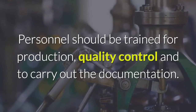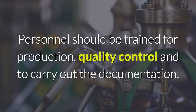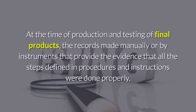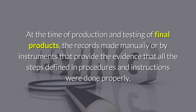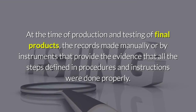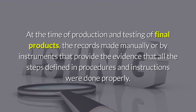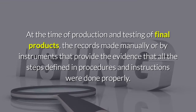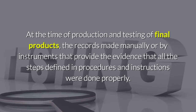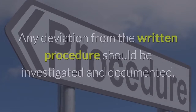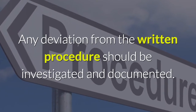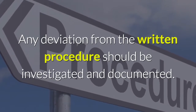Personnel should be trained for production, quality control, and to carry out the documentation. At the time of production and testing of final products, records made manually or by instruments should provide evidence that all the steps defined in procedures and instructions were done properly. Any deviation from the written procedure should be investigated and documented.